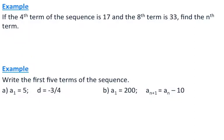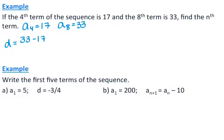For the second example, I'm given the 4th term of the sequence, which is 17, and the 8th term, which is 33, and I want to find the nth term. I'm not given the first term or common difference directly, but I can use a4 equals 17 and a8 equals 33 to figure out the common difference. Since this is an arithmetic sequence, the common difference is calculated like slope: 33 minus 17 divided by 8 minus 4, which is 16 over 4, so the common difference is 4.